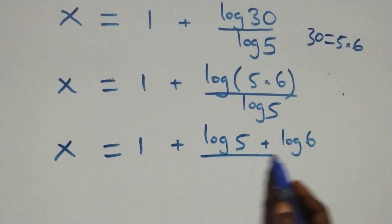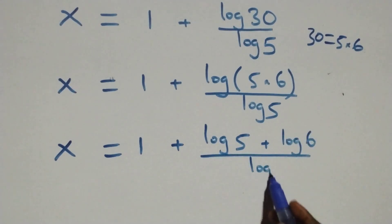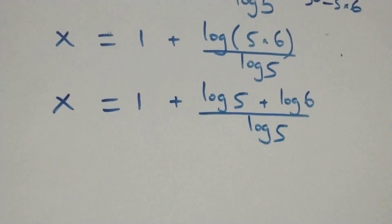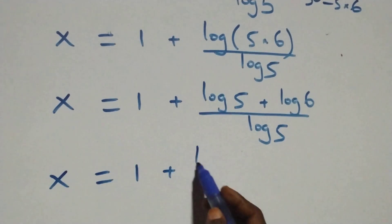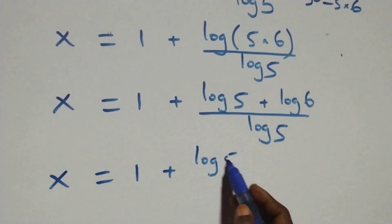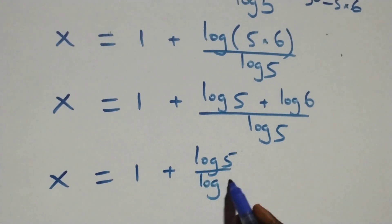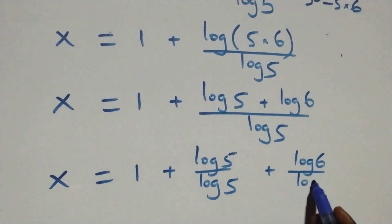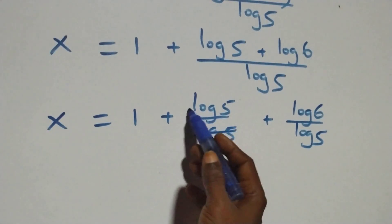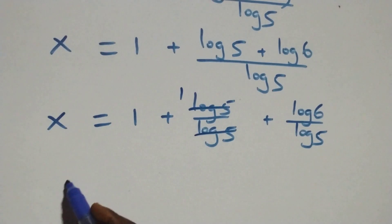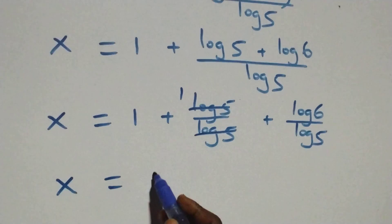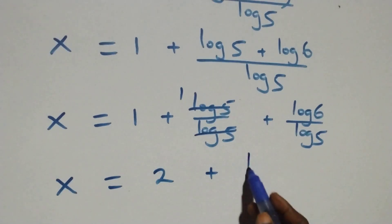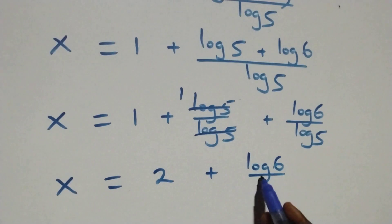This again follows the product law of logarithms, so x equals 1 plus (log 5 plus log 6) over log 5. Separating into two fractions: x equals 1 plus log 5 over log 5 plus log 6 over log 5. Log 5 over log 5 cancels to 1, so x equals 1 plus 1 plus log 6 over log 5, which gives x equals 2 plus log 6 over log 5.